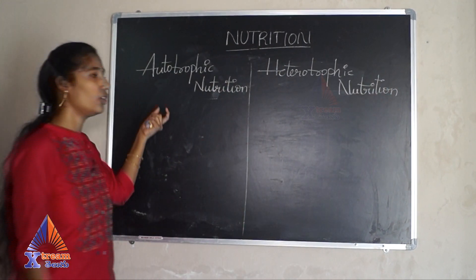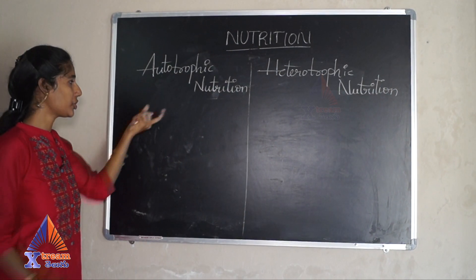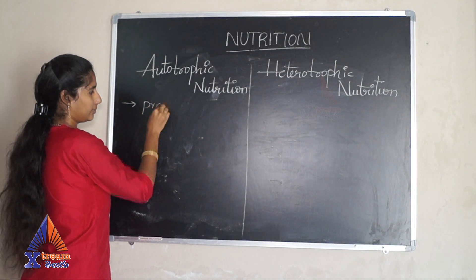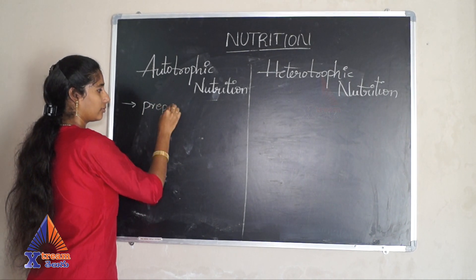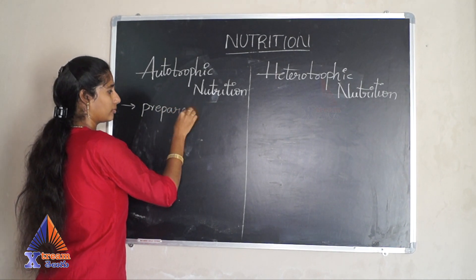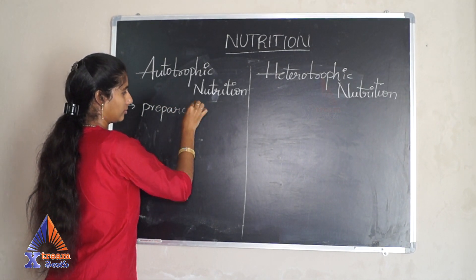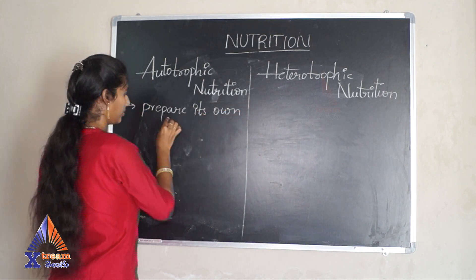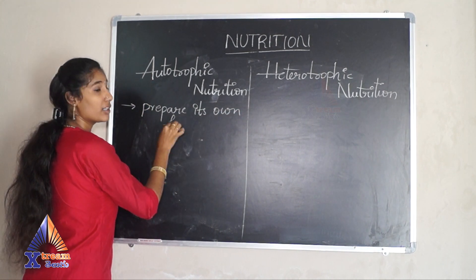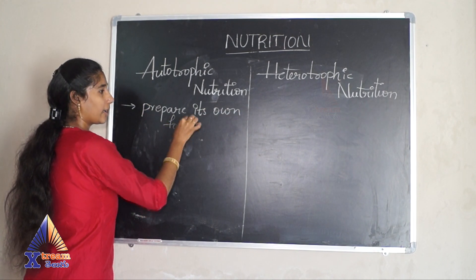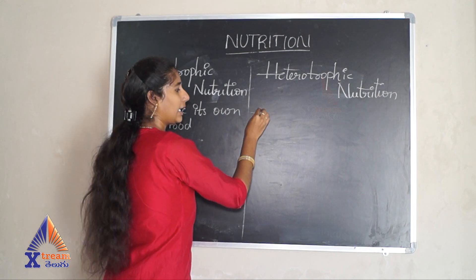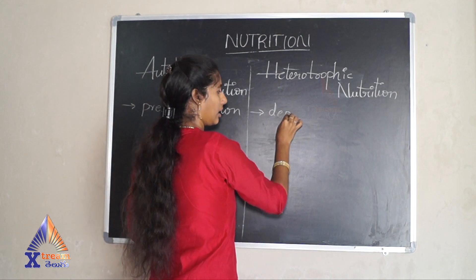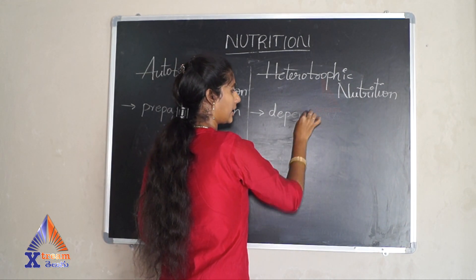Autotrophic nutrition means the organism prepares its own food. This is one key difference. In heterotrophic nutrition, the organism depends on another organism for food.